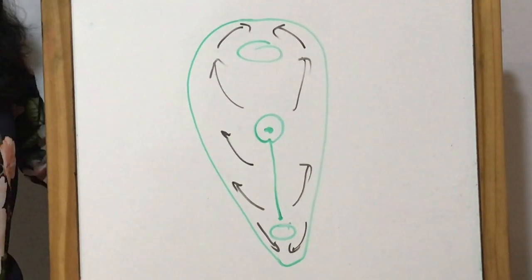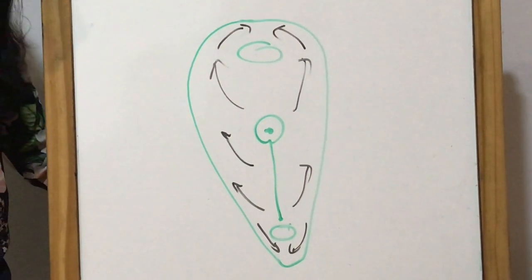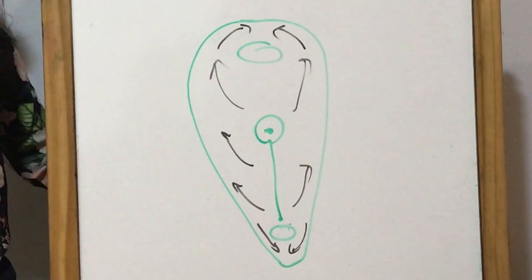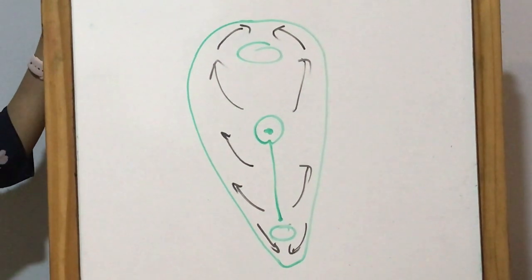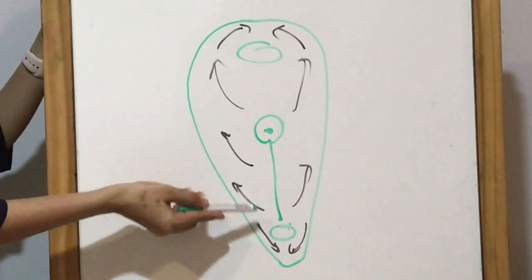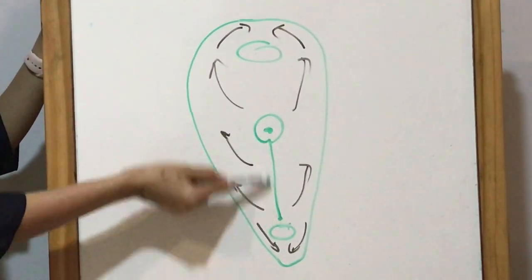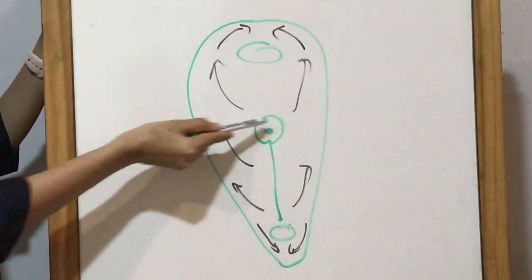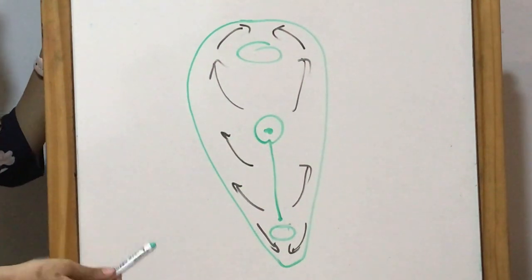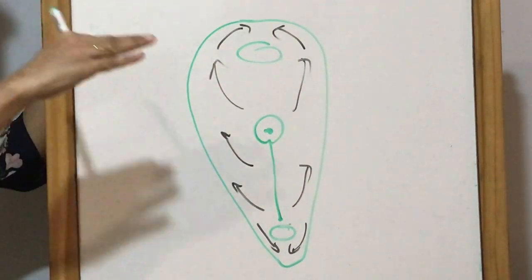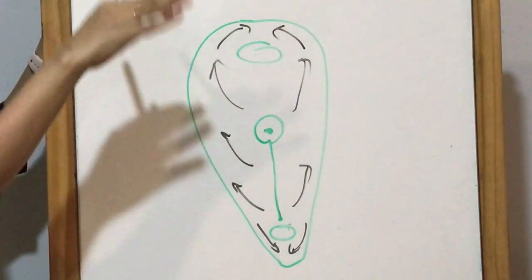The hormones secreted by the gonads influence further development of the duct system and also the external genital system. To understand the development of external genitalia, recall the process of gastrulation, where formation of the primitive streak occurs during the third week of intrauterine life. The formation of the primitive streak helps in the migration and formation of three germ layers: the ectoderm, mesoderm, and endoderm.